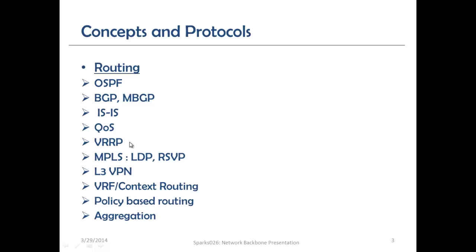We also have Quality of Service as a protocol, which is QoS, and the VRRP — Virtual Routing Redundancy Protocol. We have Multi-Protocol Label Switching, which is MPLS. This can be implemented in two forms: LDP, the Label Distribution Protocol, or traffic engineering via RSVP, the Resource Reservation Protocol. We also have Layer 3 VPN, VRF, virtual routing and forwarding, routing policy, policy-based routing, and aggregation. To implement end-to-end routing, you should have competence across these different routing protocols.